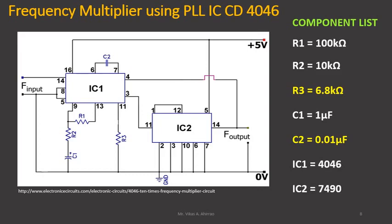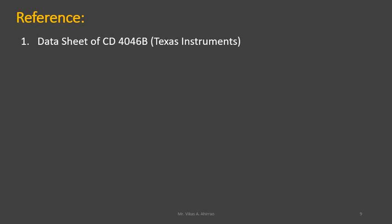Using certain component values mentioned in the component list — R1 = 100 kΩ, R2 = 10 kΩ, R3 = 6.8 kΩ, low pass filter capacitor C1 = 1 µF, and VCO timing capacitor C2 = 0.01 µF — we can design the frequency multiplier in a very simple way. For the design, you may refer to the datasheet from Texas Instruments for the IC CD4046B. Thank you.